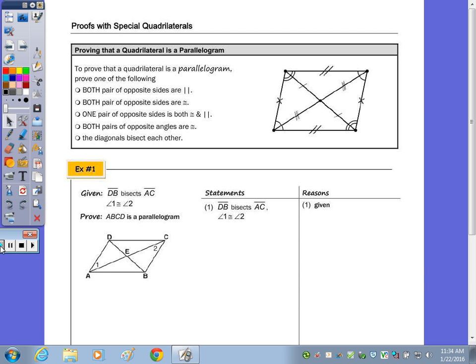With coordinate geometry, if it doesn't specify the method, I always use the midpoint formula to show the diagonals bisect each other. So you could do that here, or we could use a different method.